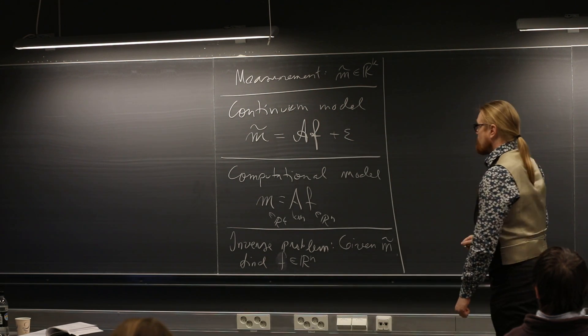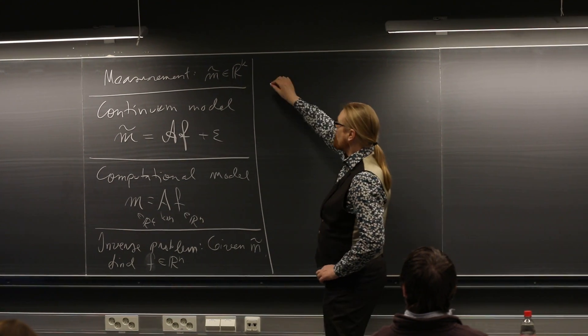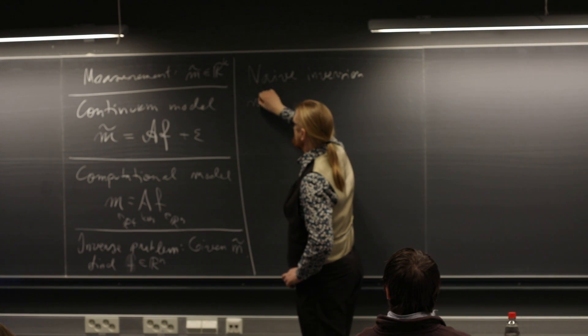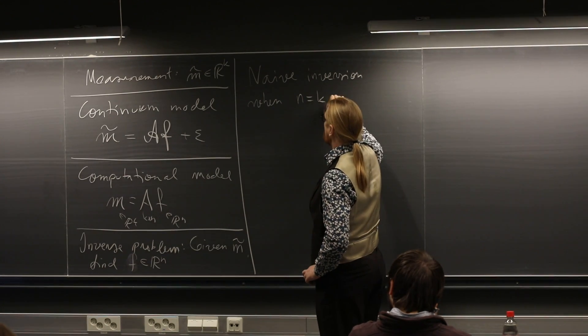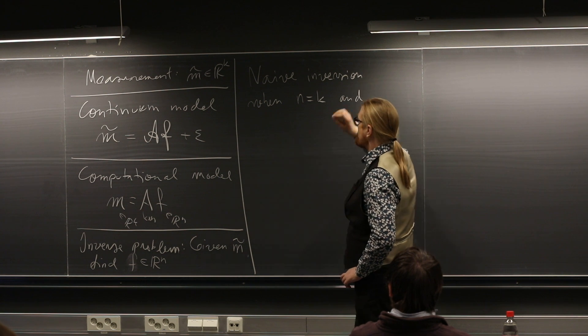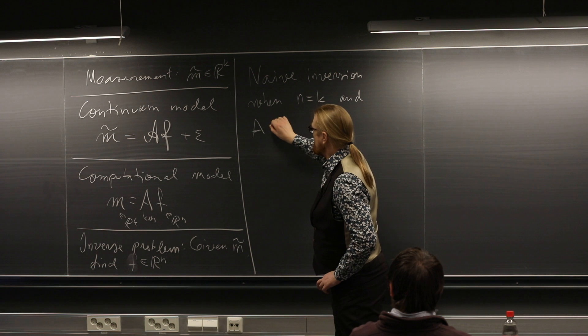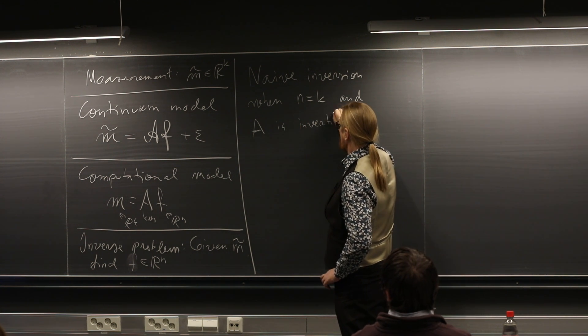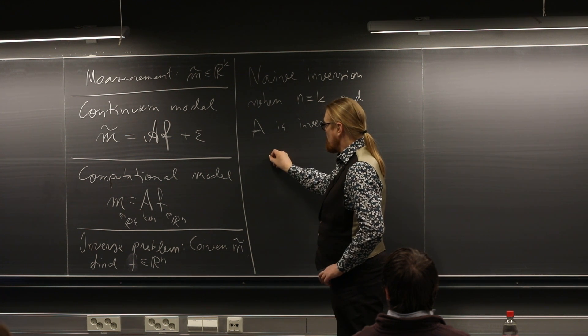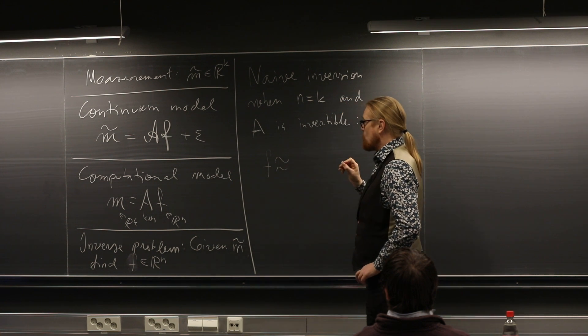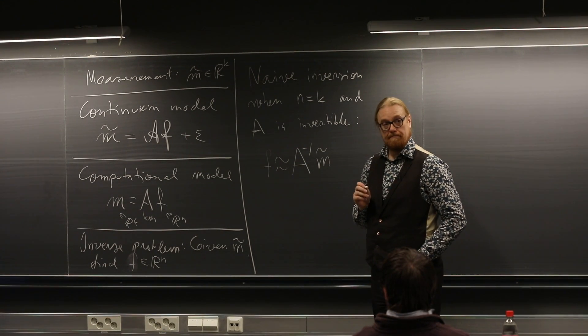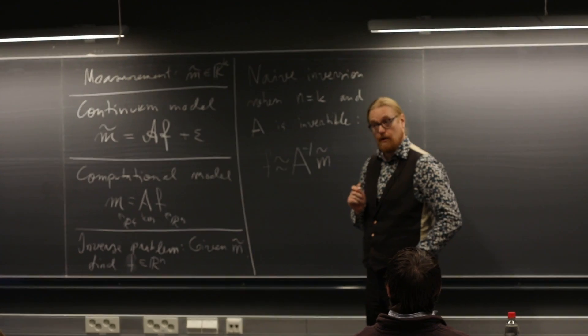And then, we talked already a little bit about naive inversion. In the case when N equals K, when the matrix A is square, when N is K and A is invertible. Namely, then we thought, let's compute F, let's try to compute F as A inverse times M tilde. We saw a little bit already some problems with this when working with the one-dimensional deconvolution.